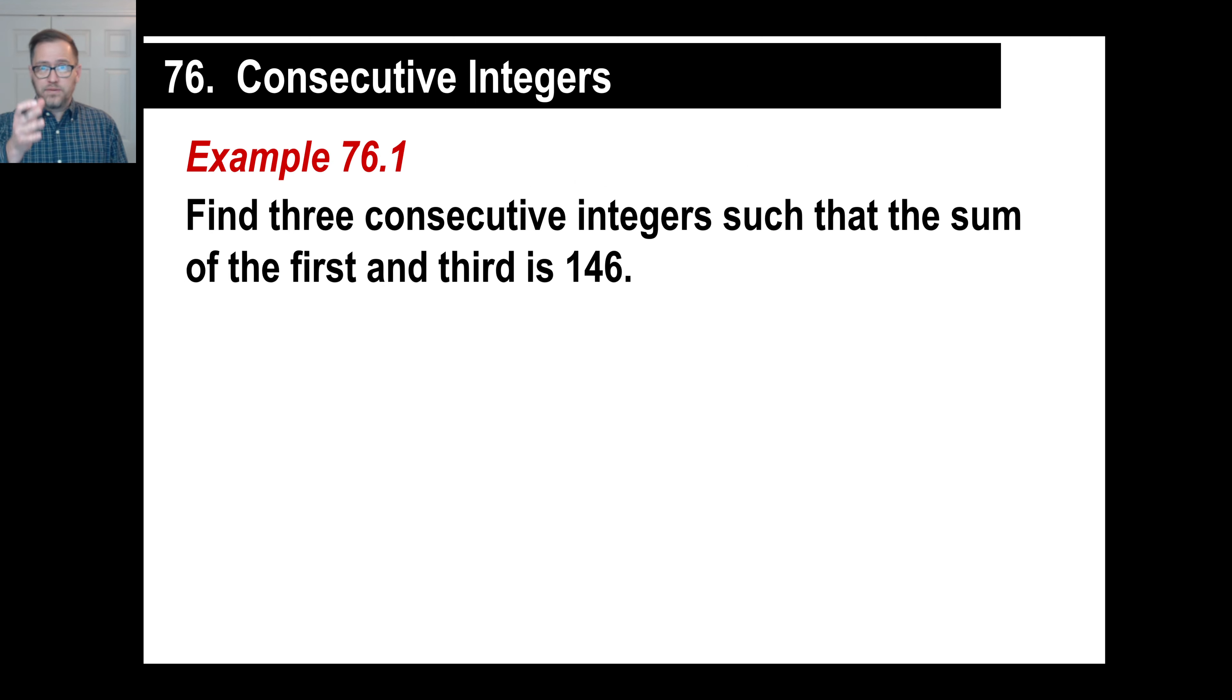Here is an example. I'd write this down and make sure you have the exact format exactly. Find three consecutive integers such that the sum of the first and the third is 146. Now, that sounds really complicated. Easiest thing to do in these is to go ahead and just write three consecutive integers. I'll call them x, x plus 1, and x plus 2. In other words, that's the first one, that's the second one, and that's the third one.